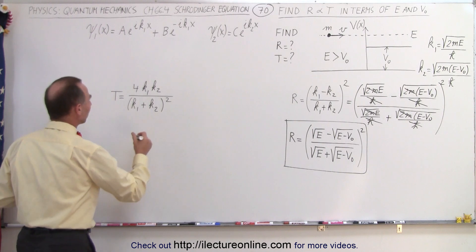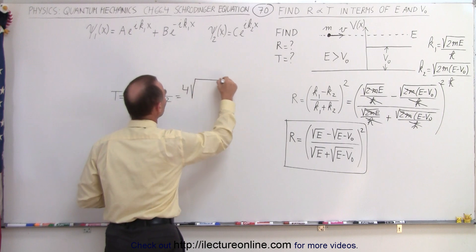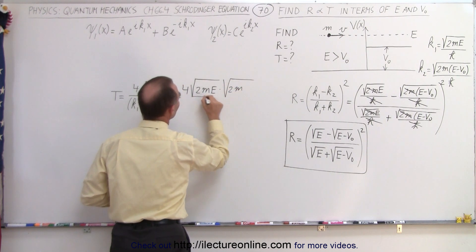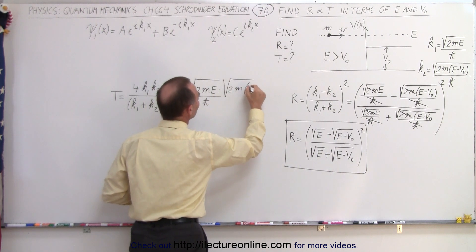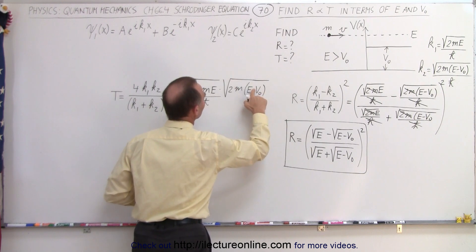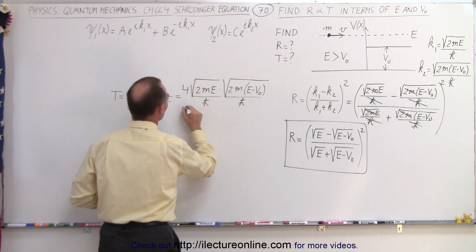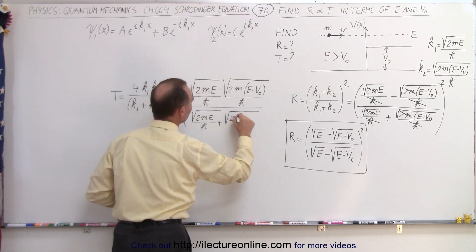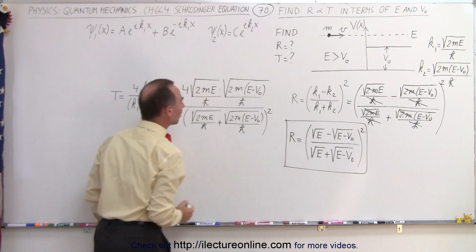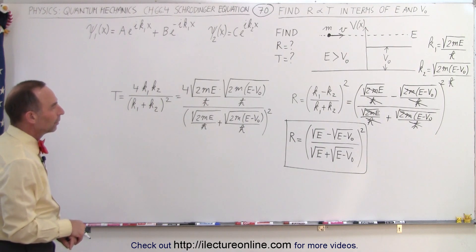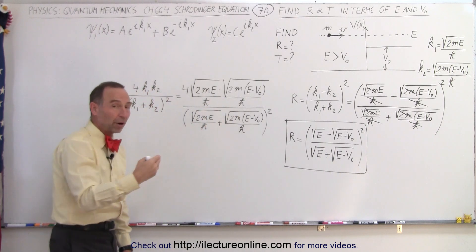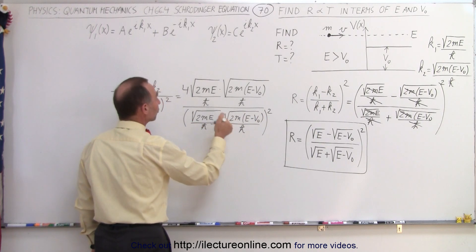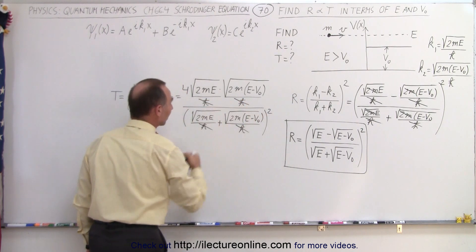We'll do the same for the transmission coefficient. This equals 4 times K1, which is the square root of 2mE, times K2, which is the square root of 2m(E − V₀), divided by h-bar — all divided by the quantity (K1 + K2) squared in the denominator. In the numerator we have h-bar times h-bar, which is h-bar squared. In the denominator, factoring out h-bar squared from the squared term, those h-bar squared factors cancel one another.